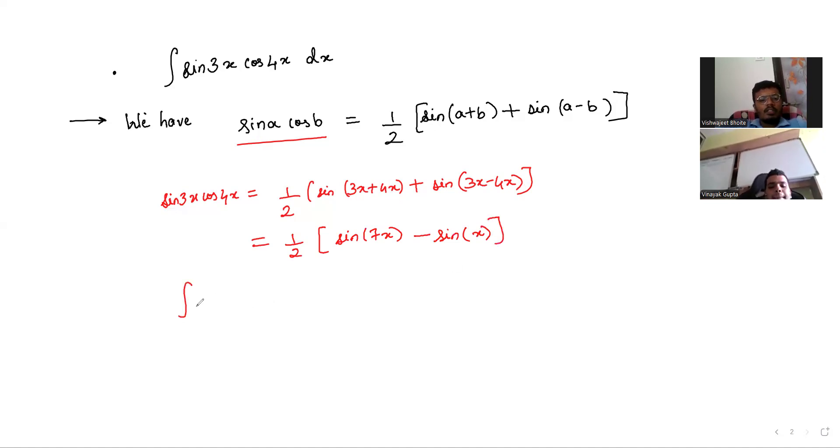Now we have to integrate sin(3x)cos(4x)dx, which is equal to the integral of 1/2[sin(7x) - sin(x)]dx, which is 1/2[integral of sin(7x)dx minus integral of sin(x)dx].